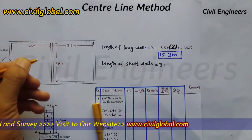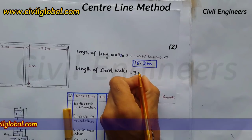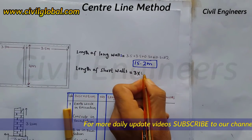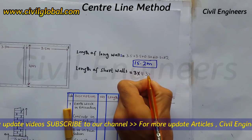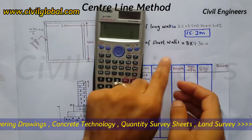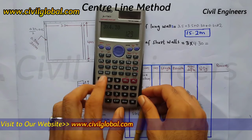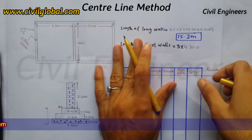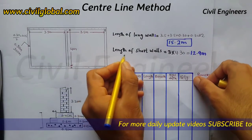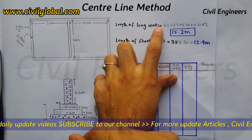So 0.15 here and 0.15 here gives 4.30 meters per short wall. We have 3 short walls, so: 3 multiplied by 4.30 equals 12.9 meters. So the length of the short walls is 12.9 meters.